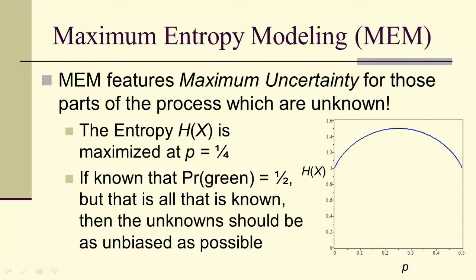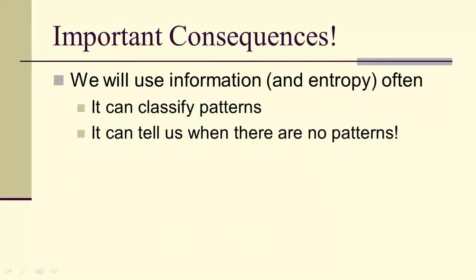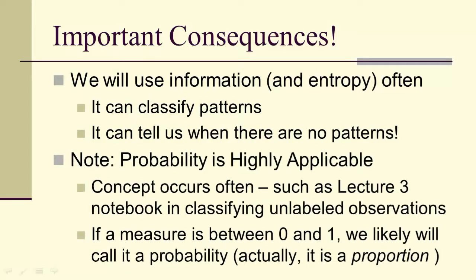So the maximum entropy principle features maximum uncertainty for those parts of the process which are unknown. In our example, the maximum for p is a fourth. So if it's known that the probability of green is a half, but that's all that's known, then the unknown should be as unbiased as possible.